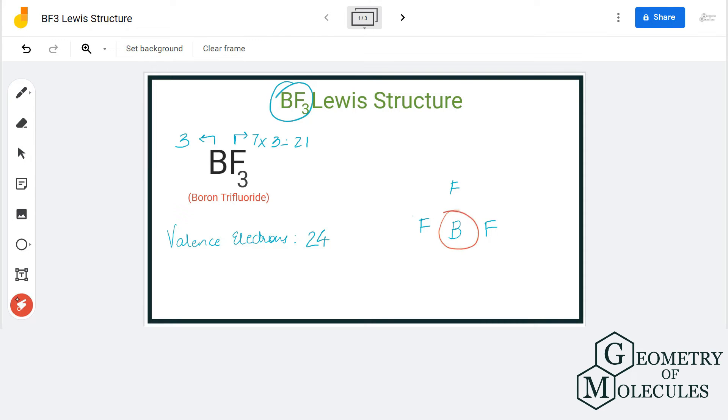We'll place all the fluorine atoms around it like this. We'll place two valence electrons between each fluorine and boron atom to show a chemical bond. So here we are placing two, two here, and two here. So we have used six valence electrons out of 24 and we are left with 18 more electrons.